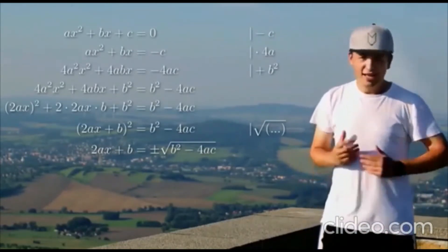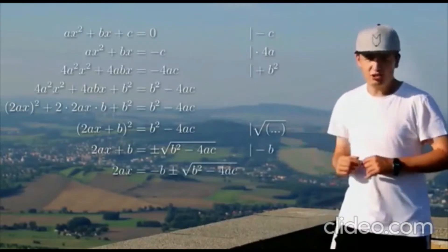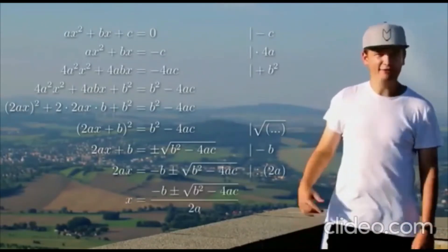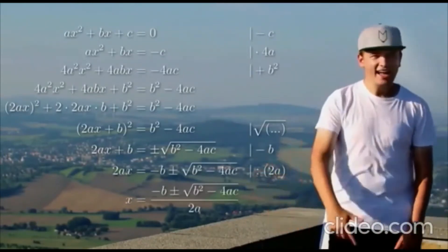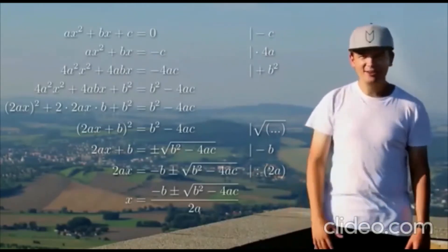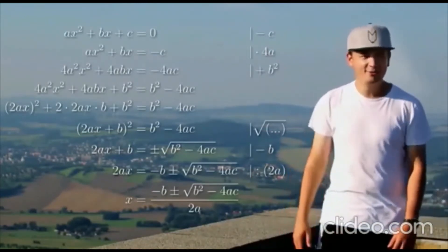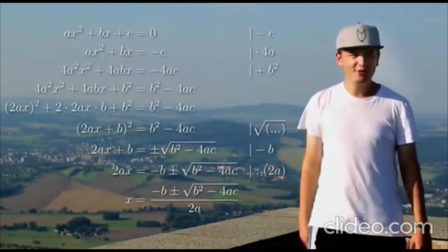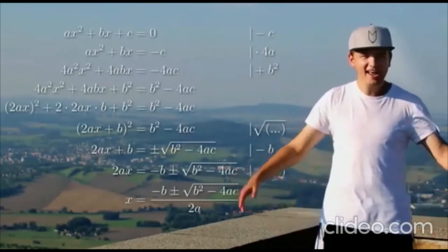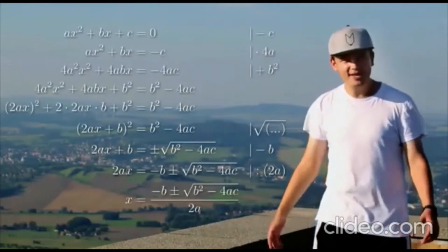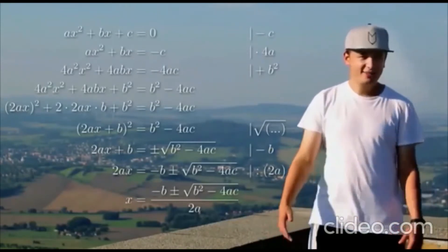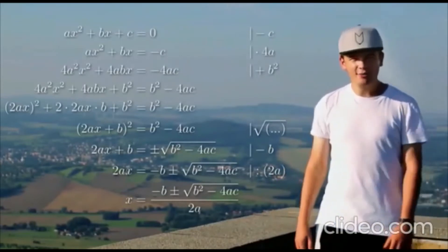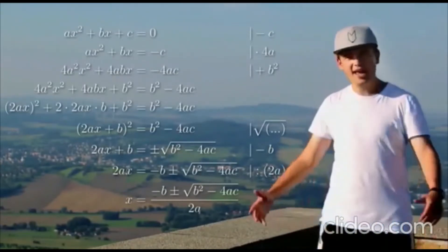And if you look to the left side, you know what will be next. Subtraction of b and division by 2a gives us the formula for x: negative b plus or minus the square root of b squared minus 4ac over 2a.